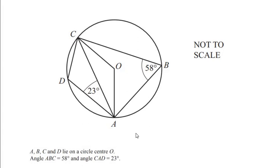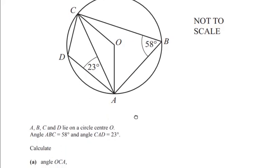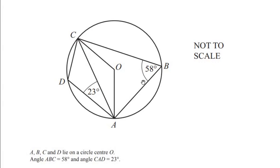Hello and welcome to my channel. In this video we are going to solve an example on circle theorems. A, B, C and D lie on a circle with center O. Angle ABC is 58 degrees and angle CAD is 23 degrees. We have to calculate angle OCA, which is over here.